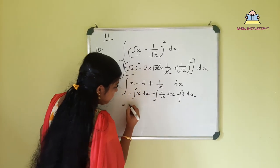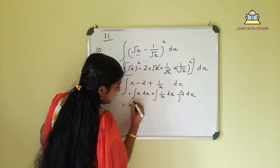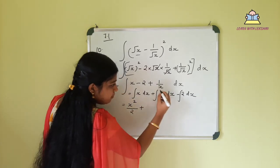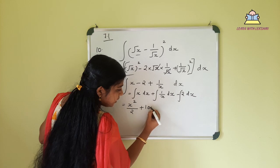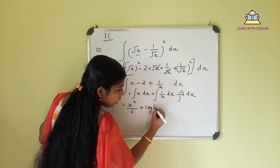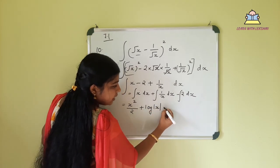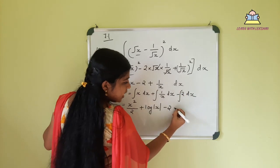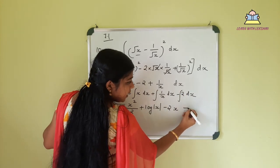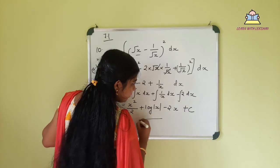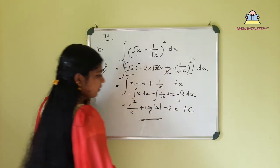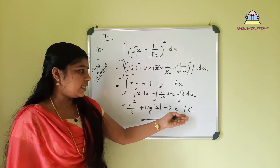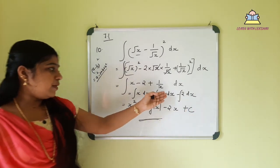Applying the power rule: integral of x is x squared by 2, the constant minus 2 integrates to minus 2x, and integral of 1 by x is ln x. But the stated answer here is x squared by 2 minus 2x plus c, with 1 by x noted as well. Plus constant c for the final answer.